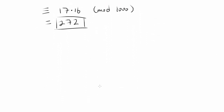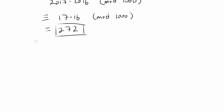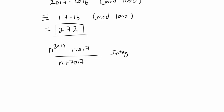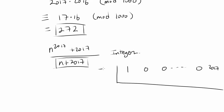I also want to mention the method my younger brother showed me, using synthetic division. We know that n to the 2017 plus 2017 over n plus 2017 is an integer because n plus 2017 divides it. We can do long division, but synthetic division is usually easier when we have n plus some constant in the denominator. So we set up synthetic division with 1, followed by zeros, and 2017 — using negative 2017 as our value. This first 1 corresponds to n to the 2017, and the zeros correspond to n to the 2016 all the way down to n to the first — so we have 2016 zeros.